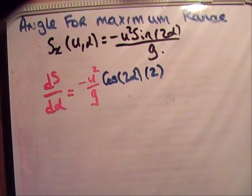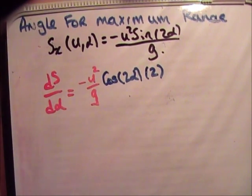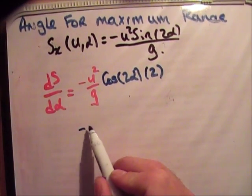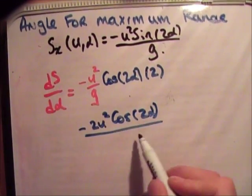Is that correct? Differentiate it. Yep, that's correct. Now, just rearrange that. So, we're going to get minus 2 u squared cos 2 alpha over g.